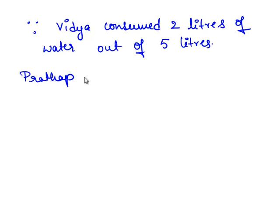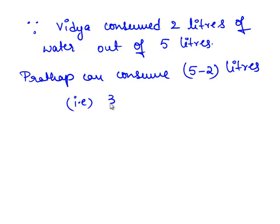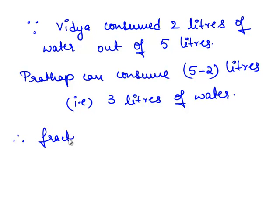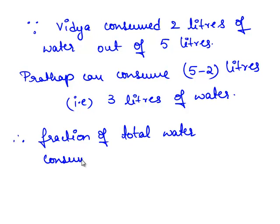Since Vidya consumed 2 litres of water out of 5 litres, Pratap can consume 5 minus 2 litres, that is 3 litres of water. Therefore, fraction of total water consumed by Pratap is equal to 3 by 5.